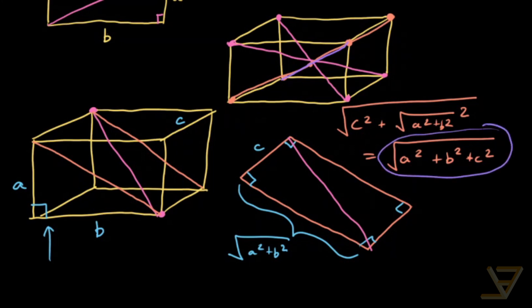And if you repeat the computation with all four space diagonals, you'll find that they're all equal to this.